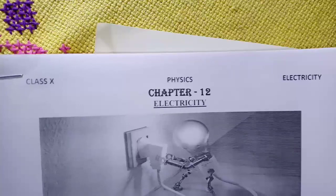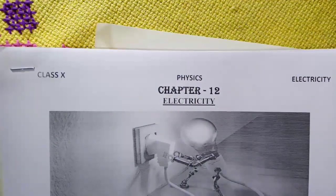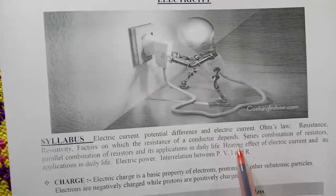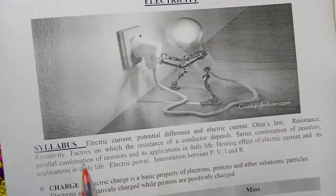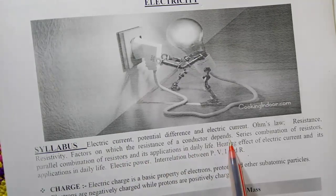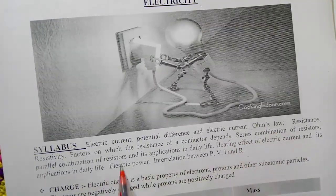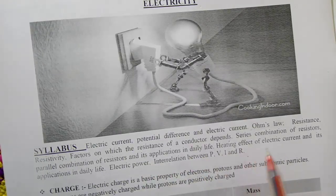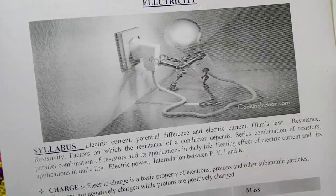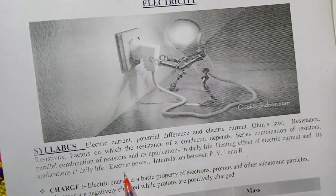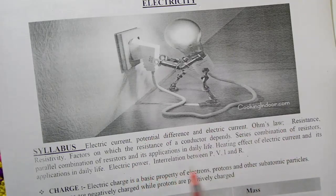In electricity we study about electric current, their behavior, magnetic behavior, and heating effect. The first chapter's syllabus covers potential difference, electric current and Ohm's law, which is the most important point. Also covered: resistance, resistivity, and the factors on which resistance of a conductor depends. Different metals have different resistances. Series combination of resistors, parallel combination of resistors and their applications. Heating effect — as used in homes: induction heater, water heater, and geyser. Electric power and the interrelation between power, voltage, current, and resistance.